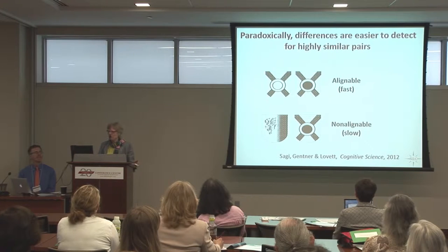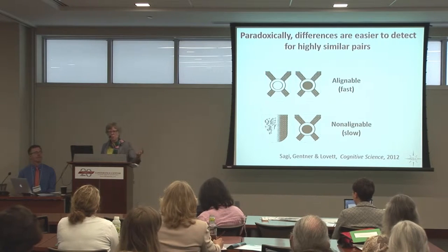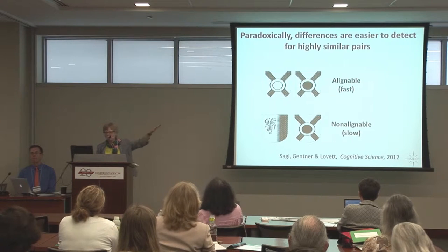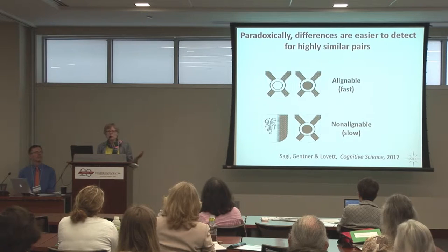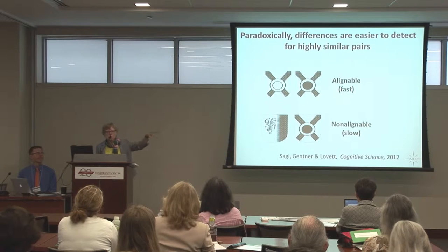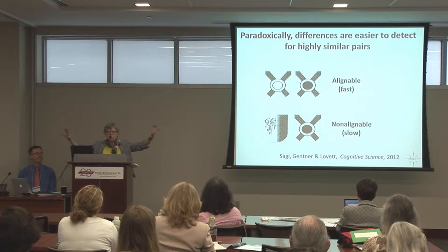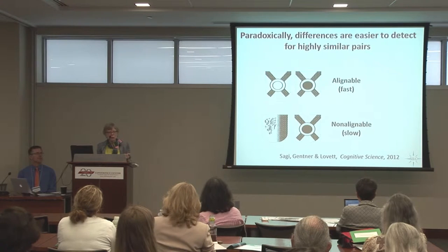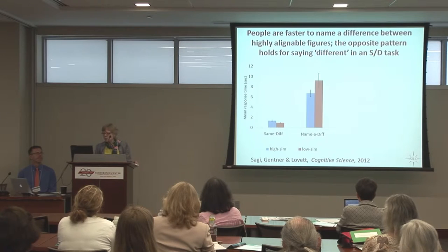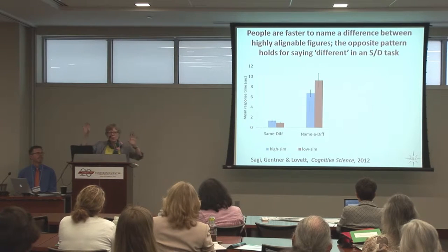Here's an experiment — after all, NSF is about basic research as well as applied, and we're talking about going from the lab to the classroom. We gave people pairs — looking at the top two pairs. If we ask you whether they are same or different, it will be easier to say that the top one and the one just below it are different than that the two top ones are different. In other words, in a same-difference task, the more different things are, the faster you are to say 'different' — that's a very old result. But if I ask you to name a difference — say one thing that's different between them — you'll be much faster for the highly similar, highly aligned pairs. People who have to name a difference are much faster for highly alignable pairs, while people who have to say whether the pairs are same or different are much faster in the opposite direction for very different pairs.